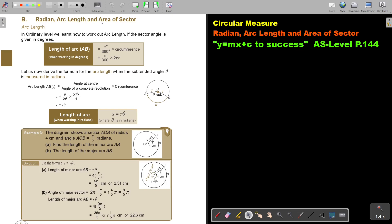Radian arc length and area of sector: arc length. In ordinary level we learned how to work out arc length if the sector angle is given in degrees. Then we just set the angle over 360, multiply the circumference. When working in degrees, it was x over 360 multiply - how do we work out the circumference of a circle? 2πr.